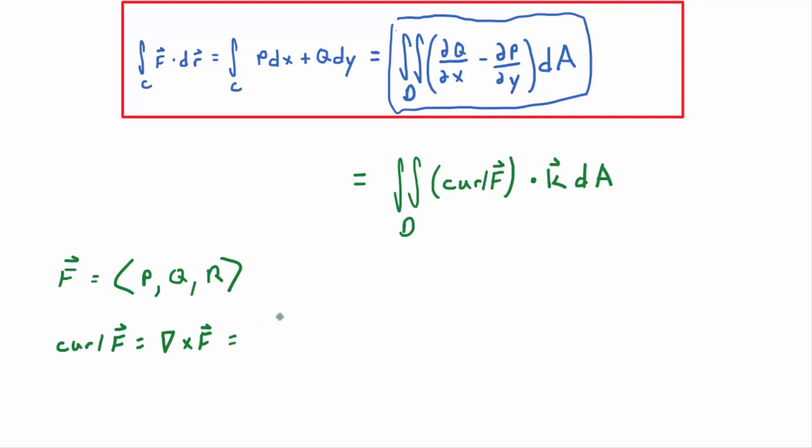Okay, so let's set it up. i, j, k. Del is what? d/dx, d/dy, d/dz. And then f has components p, q, and r. Now, I'm going to dot this with k, which has components 0, 0, 1.